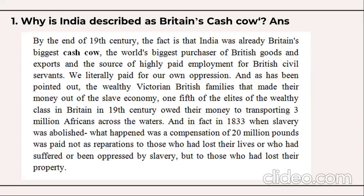Why is India described as Britain's cash cow? By the end of the 19th century, India was already Britain's biggest cash cow — the world's biggest purchaser of British goods and the source of highly paid employment for British civil servants. We literally paid for our own operation. The wealthy Victorian British families made money out of the slave economy. In 1833 when slavery was abolished, compensation of 20 million pounds was paid not to those who had suffered, but to those who had lost their property.